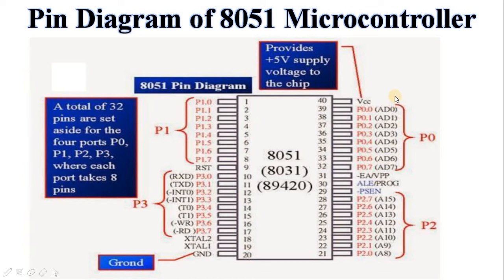Port 0 is used for both address and data bus, that is AD0 to AD7, multiplexed address/data lines. Port 0 is used to access external memory. The ALE pin is used to indicate if port 0 has address or data. When ALE equals 0, port 0 provides data (D0 to D7). When ALE equals 1, port 0 provides address (A0 to A7). These are the details of the pin diagram of AT51 microcontroller.